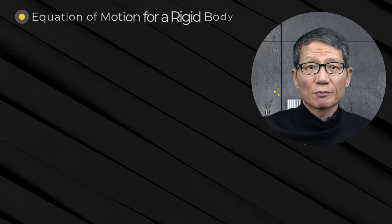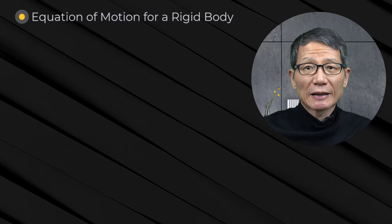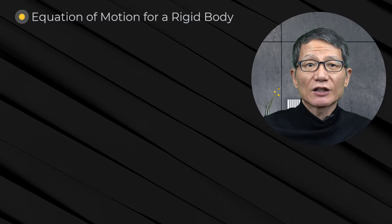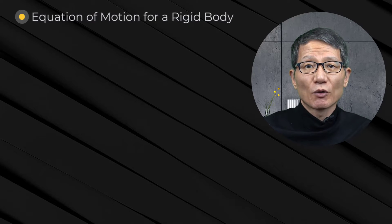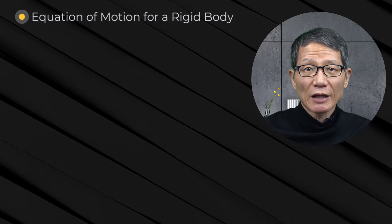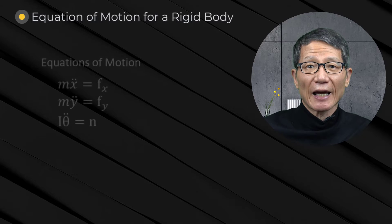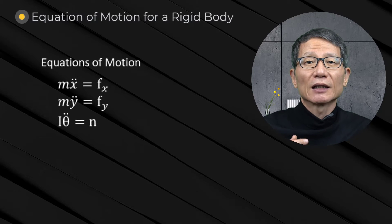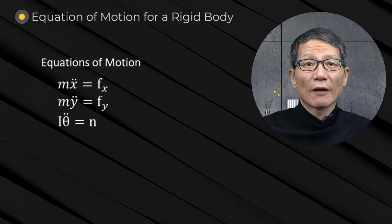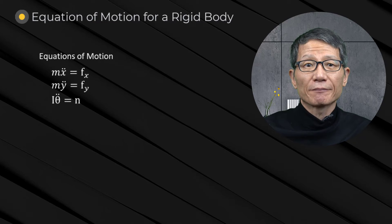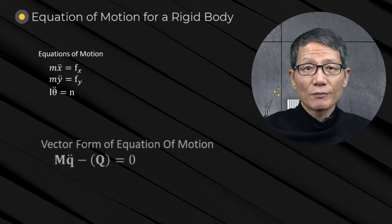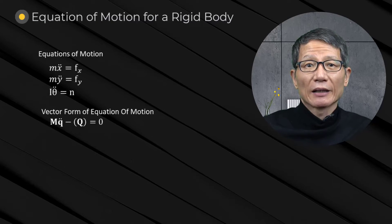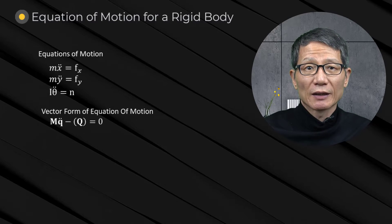For a rigid body, the additional equation of motion for rotation is added. The equations of motion in both the vectorial and variational forms are as follows.